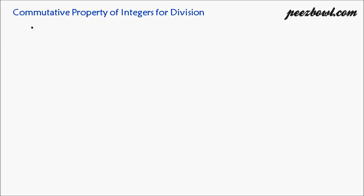Let us see different properties of integers for division. This is called the commutative property of integers for division. According to this property, when we have two integers, say A and B, the result of their division will be the same irrespective of the order in which they are divided. This simply means A divided by B is equal to B divided by A. On the left hand side A is divided by B, and on the right hand side B is divided by A — both sides should have equal value. Let us find out whether this property is true or not for division.